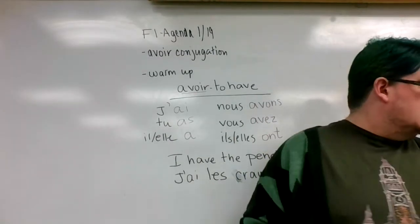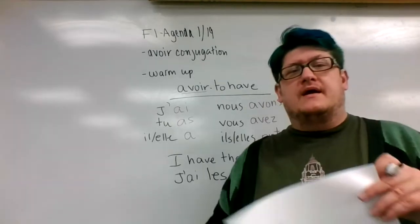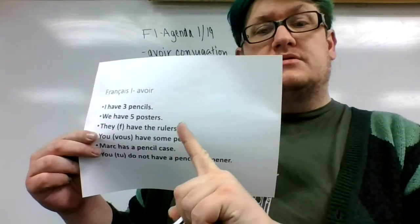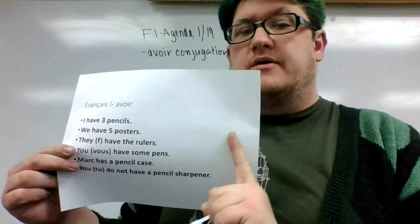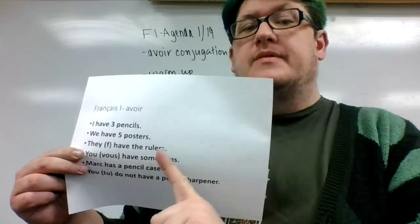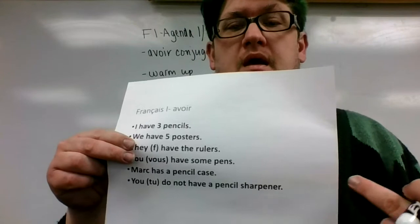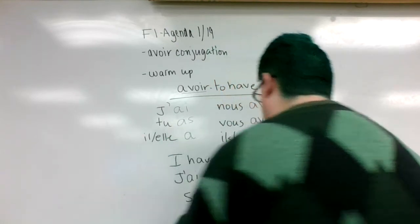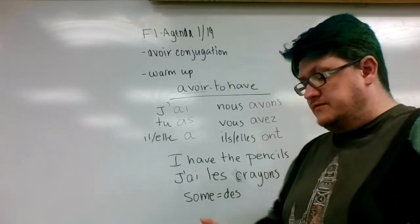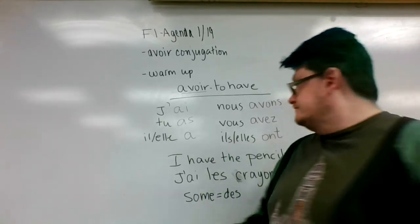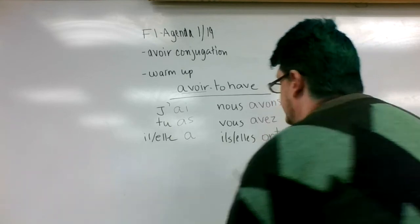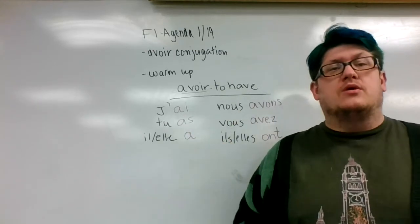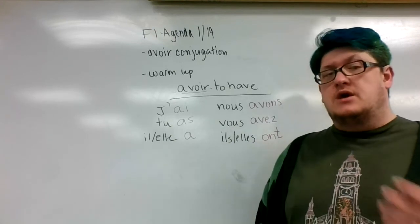On your warm-up, the first sentence says 'I have three pencils,' which we just did. Another says 'We have five posters' — those have numbers, so you just write the number out and don't use an article. But one says 'They have the rulers' — plural — so that's where you use the definite article. Another has 'some pens,' so 'some' is your DES — that's what you use with the verb for that one. Remember, this is an irregular verb, so you have to think about the irregularities. All of the verbs in the warm-up sentences will be avoir.